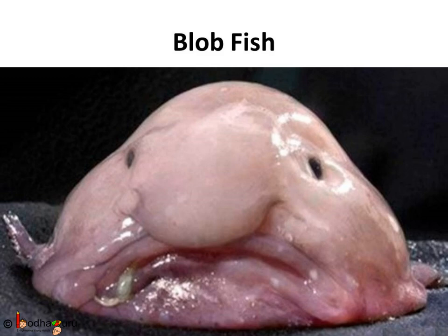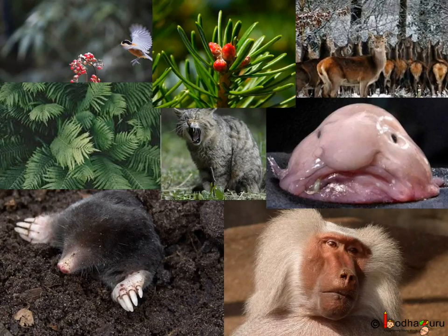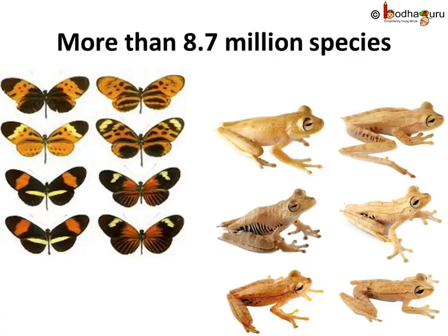No matter how much you love nature, knowing all animals and plants seems impossible. If we divide them into groups based on similarities, then we would be able to know more about animals and plants of different varieties. Hard to believe, but there are more than 8.7 million species.